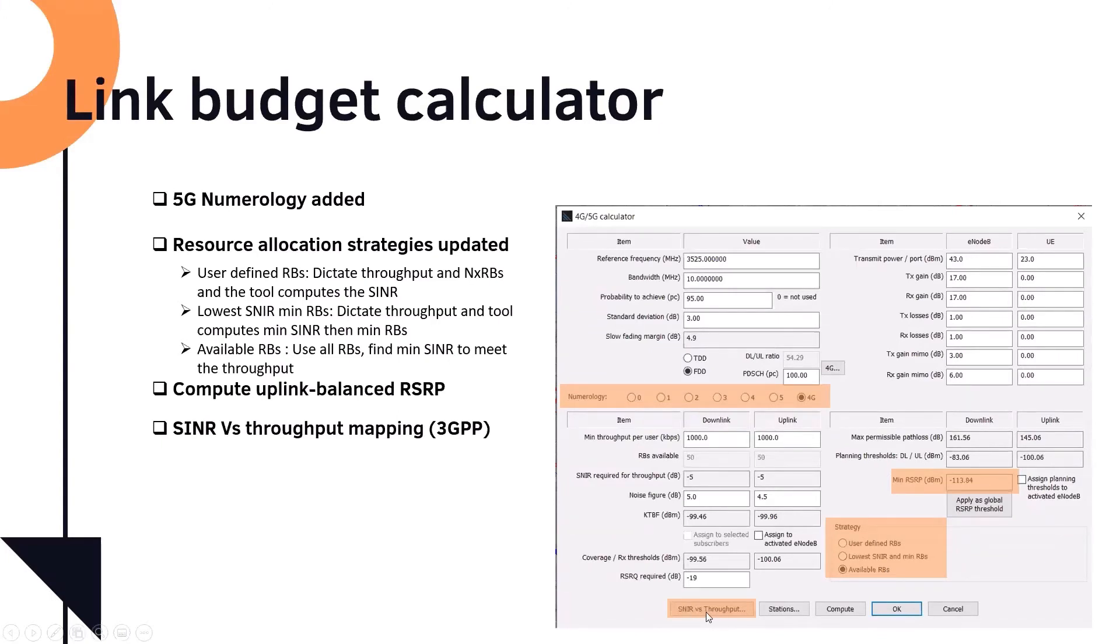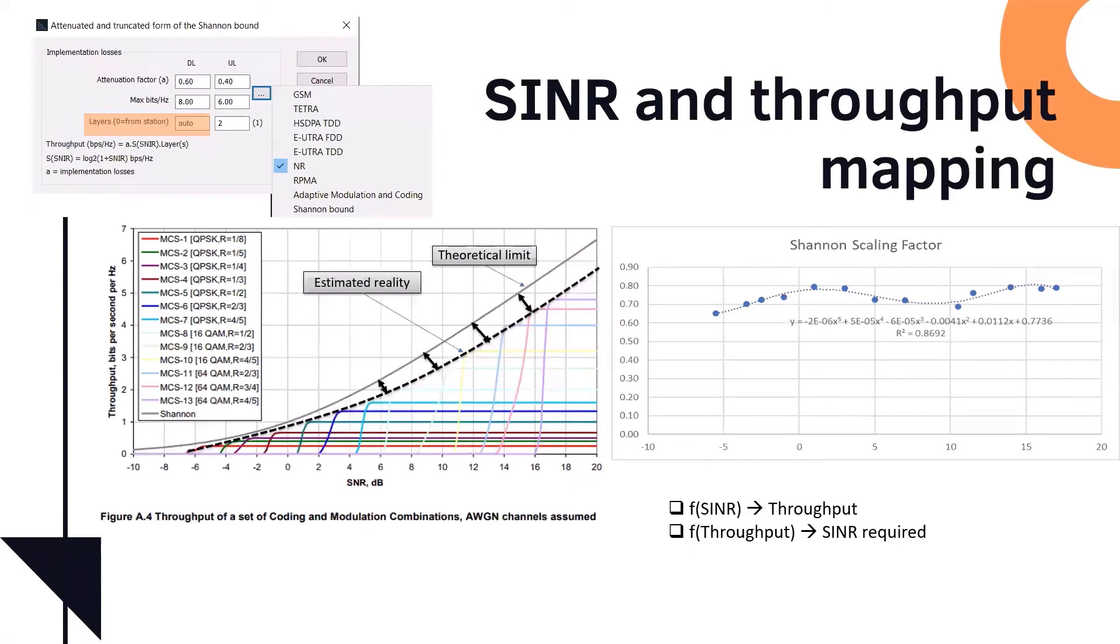We also have this SNR versus throughput. That's a very interesting function, which does the translation between signal-to-noise ratio and throughput. This is adopted by 3GPP. The 3GPP approach is based on Shannon's theory. So this is the gray one, is the Shannon bound. That's the theoretical limit, or what you need to be using practical. So estimated reality, so what we do, we have some sort of fudge factors. It's a fudge factor along the way for different signal-to-noise ratio, we apply corrections. So we apply corrections in different spots along the way. That correction is called the scaling factor, Shannon's scaling factor.